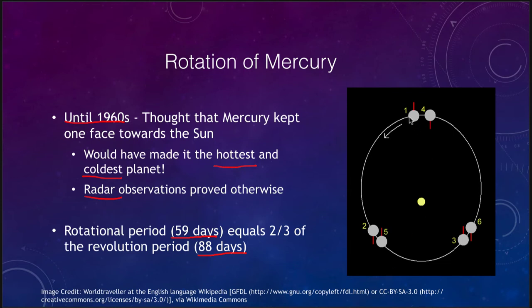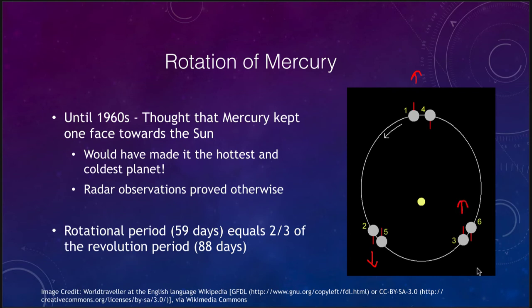The diagram here shows that at position one Mercury has rotated, then as it moves to position two it has rotated halfway around, pointing in a different direction in space. One day later it points in another direction, and after three Mercury days it is back to where it started — which equals two Mercury years. That is the two-to-three resonance for Mercury, similar to the Moon's one-to-one resonance where its day and its orbital period around the Earth are exactly the same.